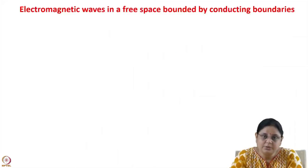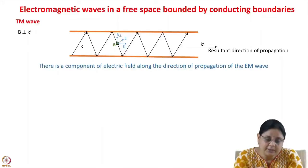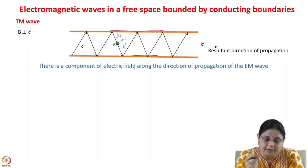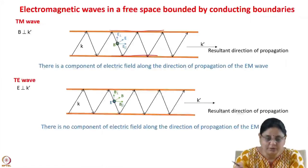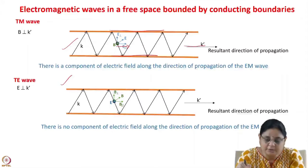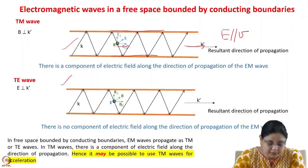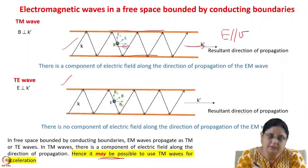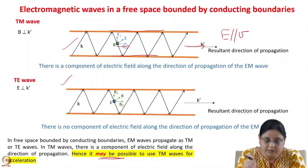Today let us see whether we can use traveling waves for acceleration. When electromagnetic waves propagate inside conducting boundaries — for example inside a waveguide — there are two cases possible: the TM wave and the TE wave. In the TM wave, there is a component of electric field along the direction of propagation, so we have E parallel to v. It may be possible to use the TM waves inside the space bounded by conducting boundaries, for example in a waveguide, for acceleration. Let us see whether we can use this traveling wave for acceleration.